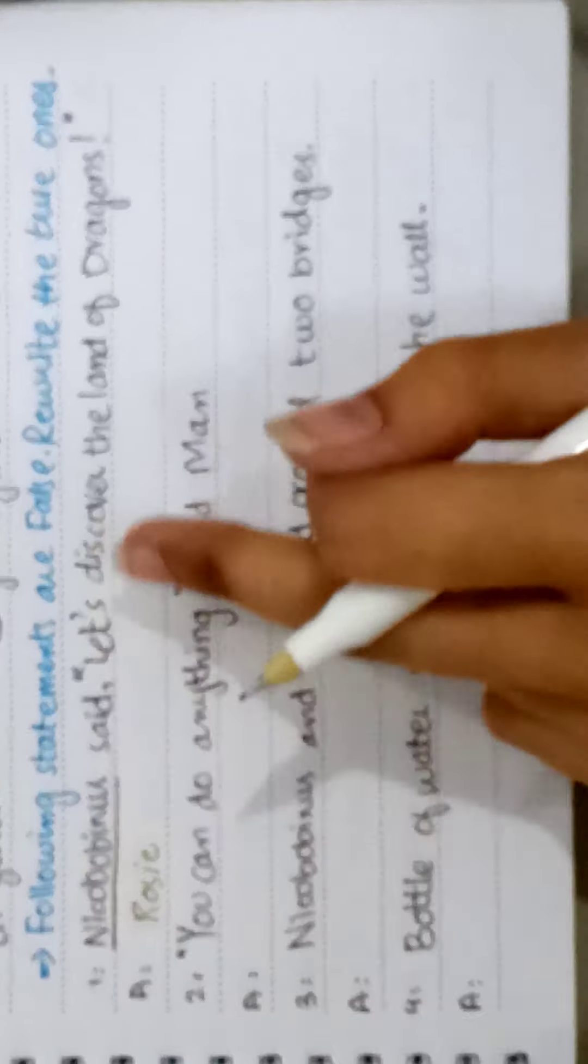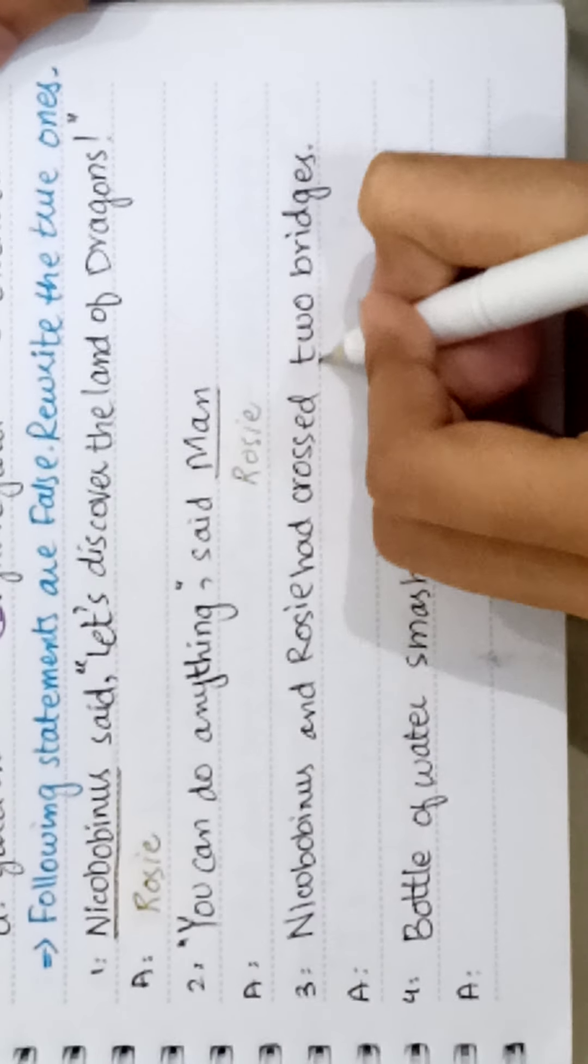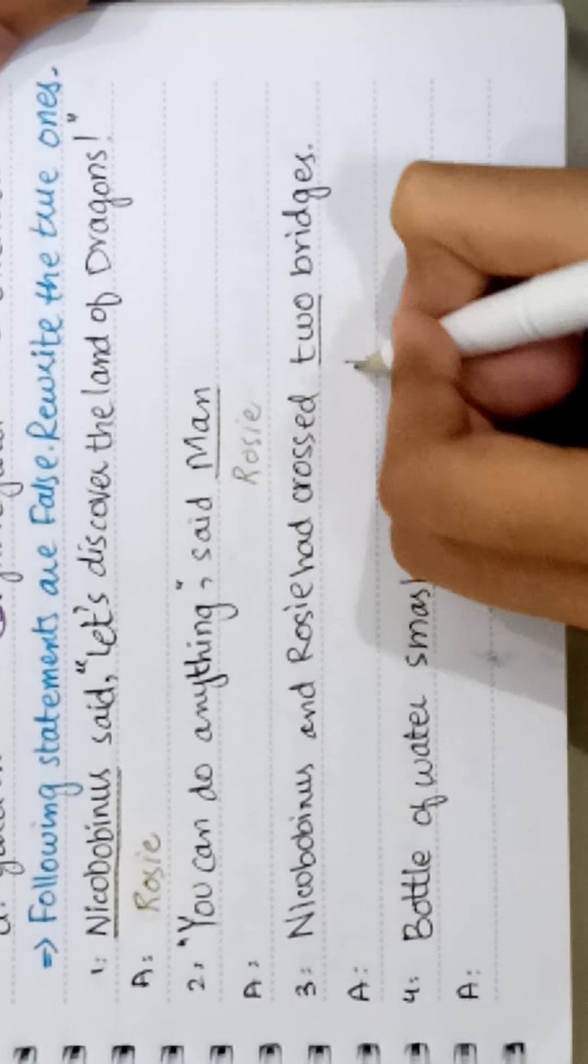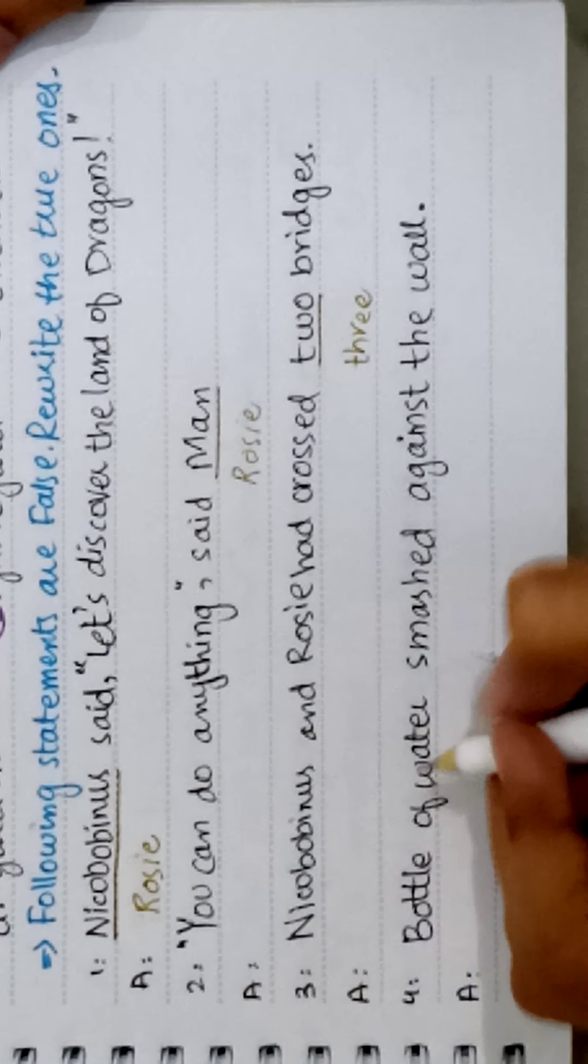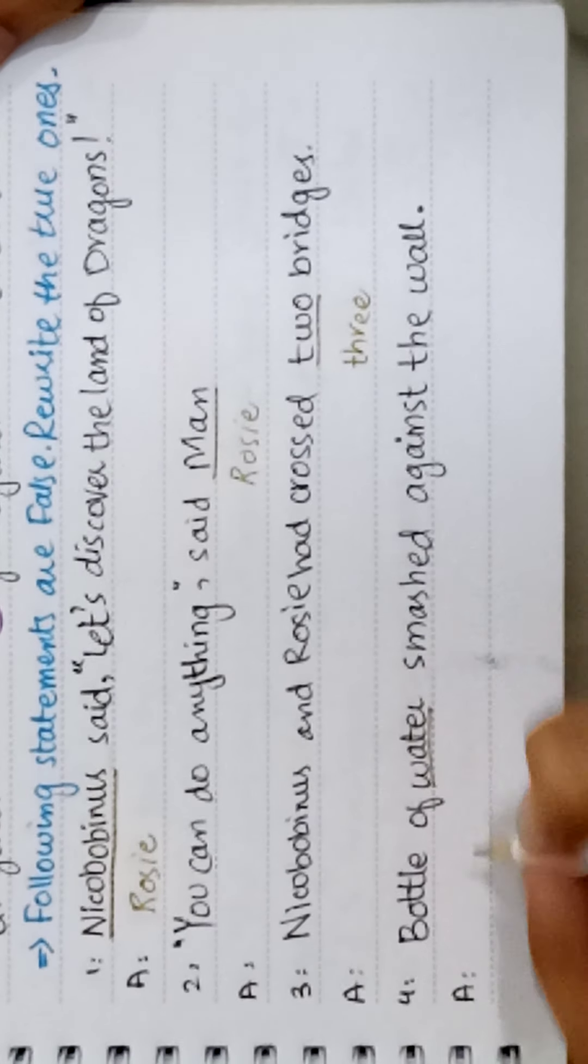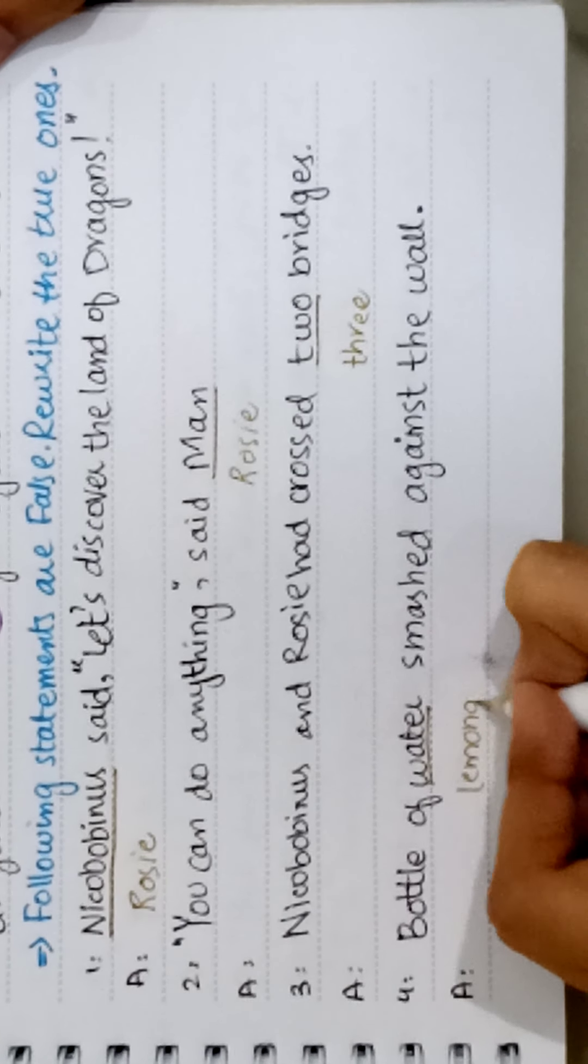Next, you can do anything said men. This I have to write: Rosie. Three, Nicobobinus and Rosie had crossed two bridges. Nicobobinus and Rosie had crossed three bridges. Now we will write the whole sentence again.